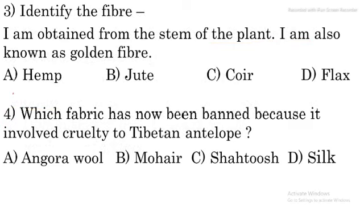Question number three: identify the fiber. 'I am obtained from the stem of the plant. I am also known as golden fiber.' We have to identify this fiber from the options: hemp, jute, coir, and flax. Jute is the right answer for this question.